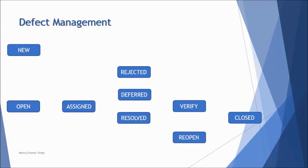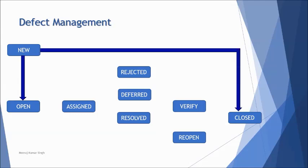The test manager's responsibility is to evaluate the reported defect and determine if it is a genuine defect. Once the manager finds it genuine, the status changes from 'New' to 'Open.' Once declared open, it is passed on to the developer lead to assign it to a developer and ask them to fix it, at which point the status changes to 'Assigned.'